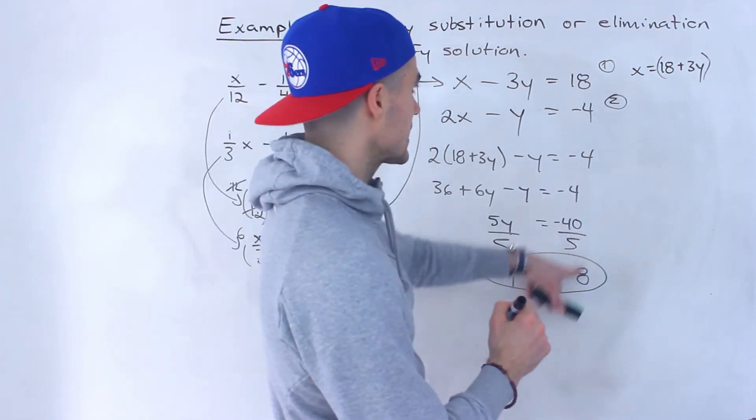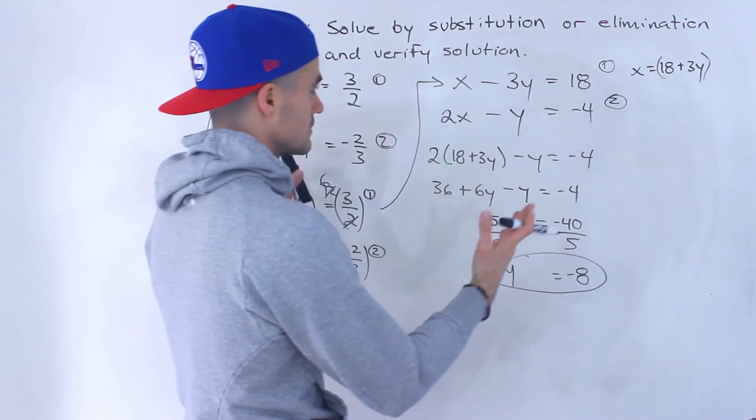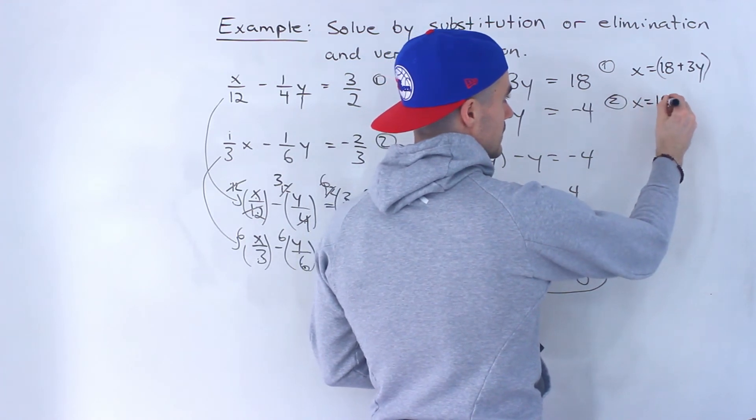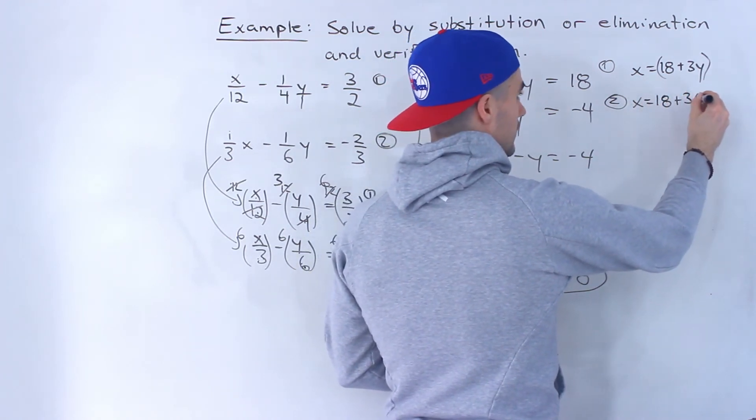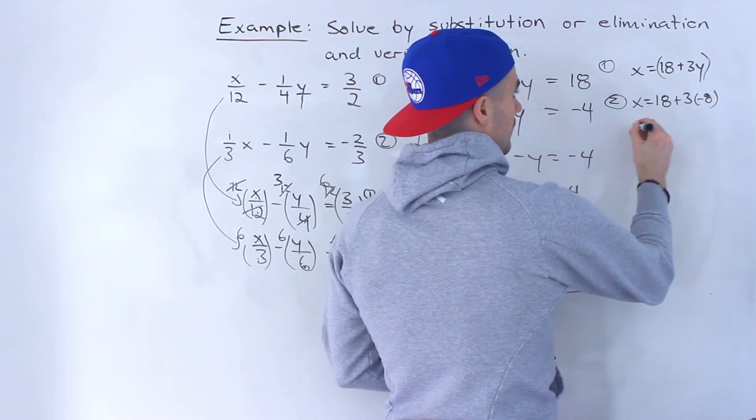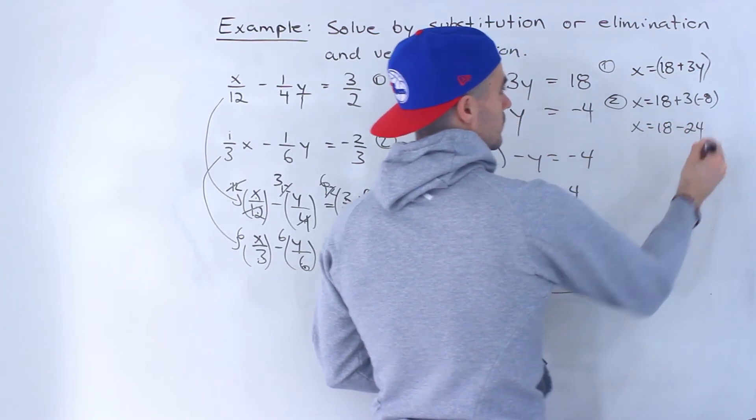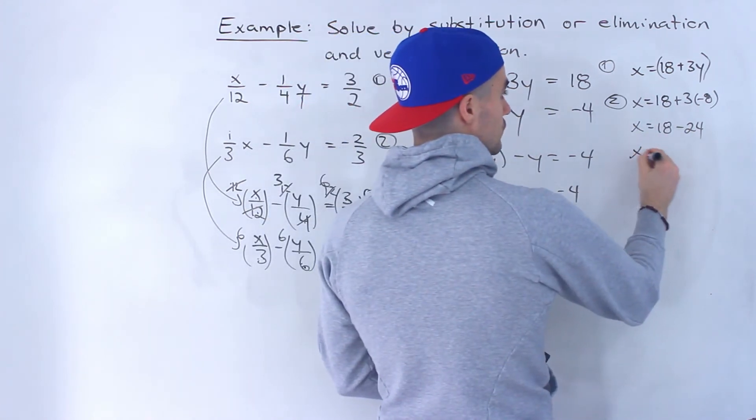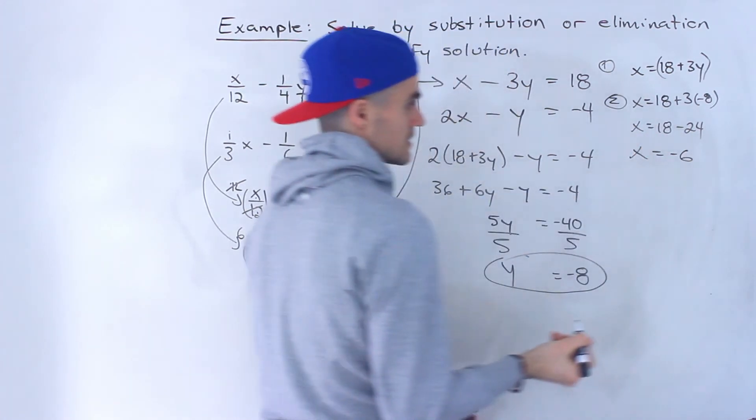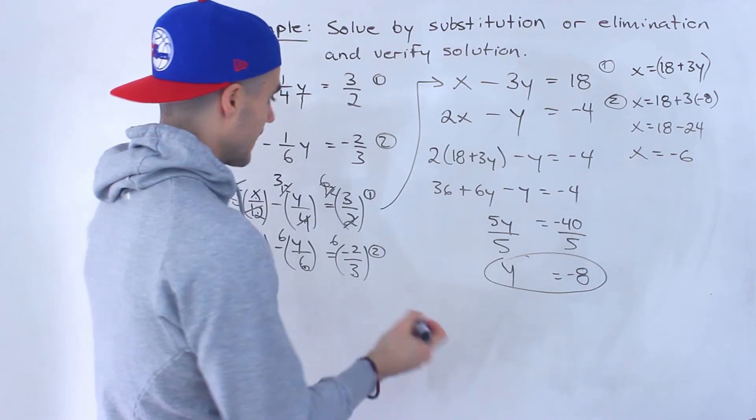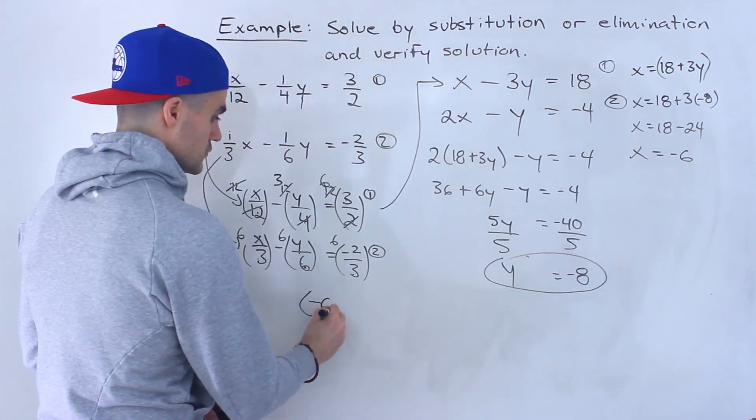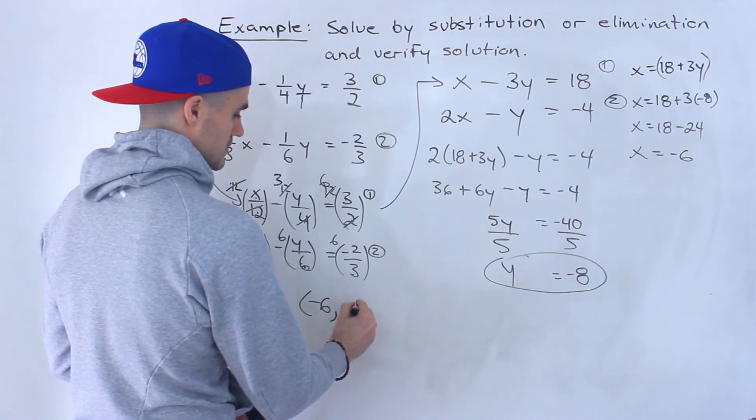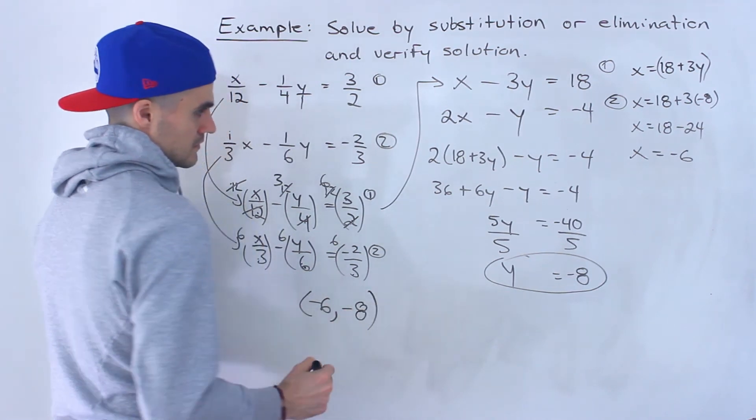And then we would take this negative 8. We could plug it into any expression and solve for x. x is already isolated here. So I'll just plug it in here. 3 times negative 8 is negative 24. 18 minus 24 gives us negative 6. So x is negative 6. I'm going to write the solution over here. And then y is negative 8. Like that.